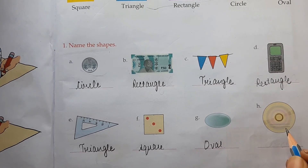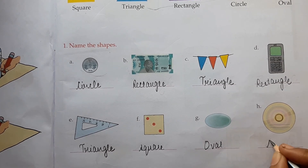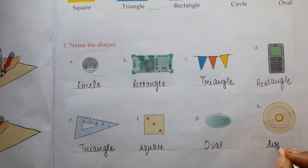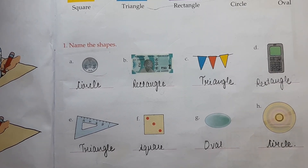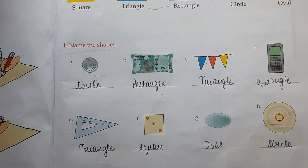Our next picture is the shape of a circle. So students, this is all about our today's work. Today we have revised the shapes. This is enough for today — till then, take care, goodbye.